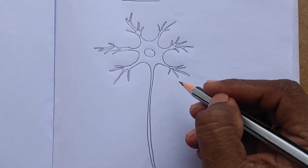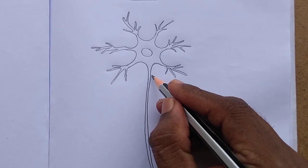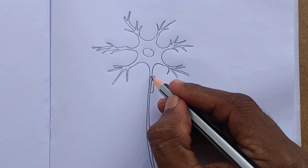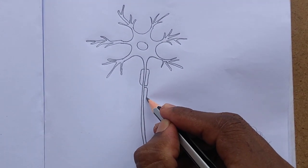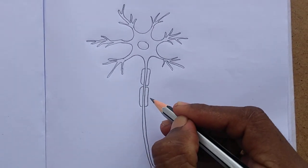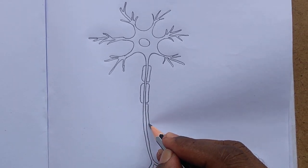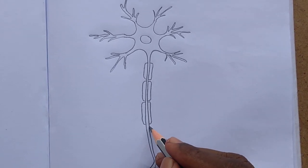Like this we have to draw the dendrites. And now we have to draw the myelin sheath on the axon. We have to draw some gaps between the myelin sheets like this. Those gaps are called nodes of Ranvier.